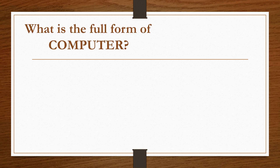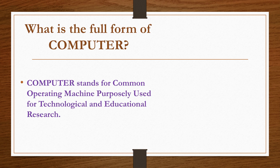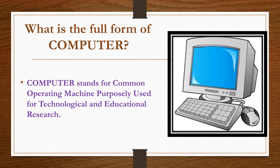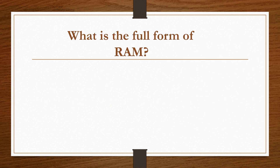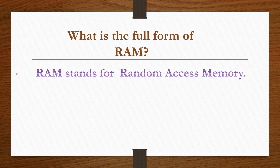What is the full form of COMPUTER? COMPUTER stands for Common Operating Machine Purposely Used for Technological and Educational Research. What is the full form of RAM? RAM stands for Random Access Memory.